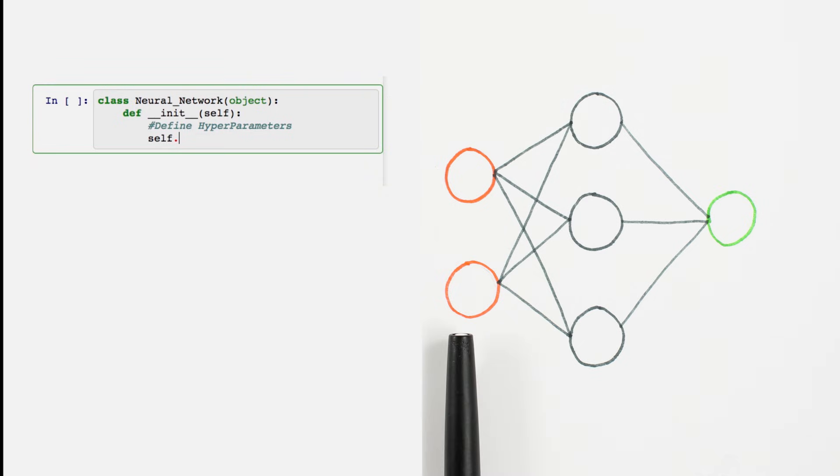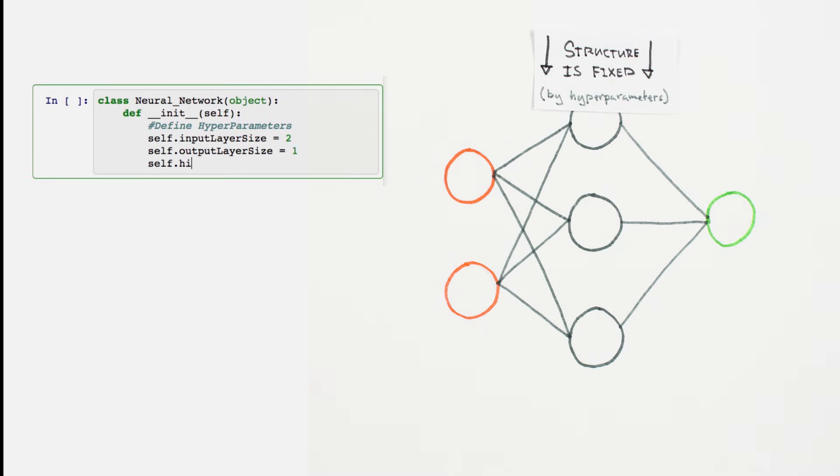Our network has two inputs, three hidden units, and one output. These are examples of hyperparameters. Hyperparameters are constants that establish the structure and behavior of our network, but are not updated as we train the network.